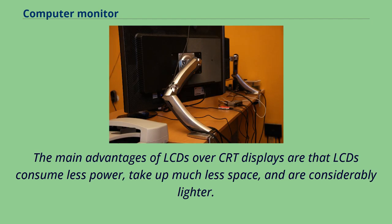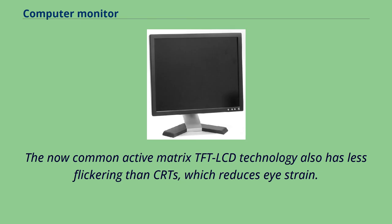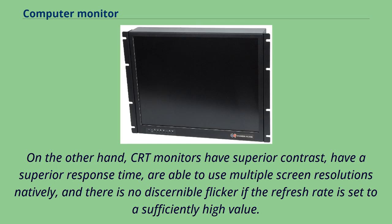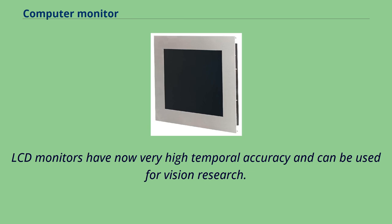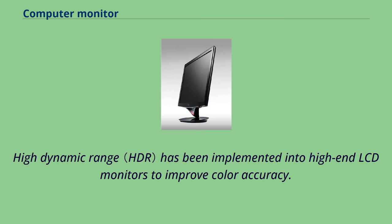The main advantages of LCDs over CRT displays are that LCDs consume less power, take up much less space, and are considerably lighter. The now common active matrix TFT LCD technology also has less flickering than CRTs, which reduces eye strain. On the other hand, CRT monitors have superior contrast, superior response time, are able to use multiple screen resolutions natively, and there is no discernible flicker if the refresh rate is set to a sufficiently high value. LCD monitors now have very high temporal accuracy and can be used for vision research. High dynamic range has been implemented into high-end LCD monitors to improve color accuracy.